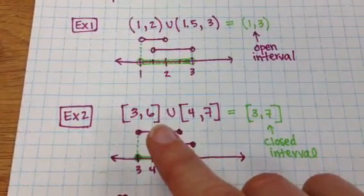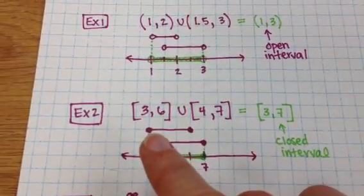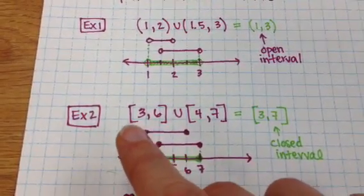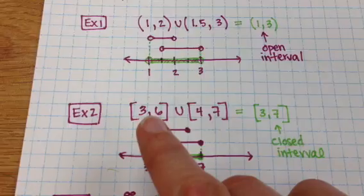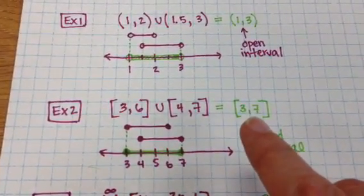Also here are two closed intervals. So the difference between open and closed is just the same as a circle right? If it's a closed circle then it's the bracket which means this is a closed interval. So here's a closed interval union with another closed interval giving us another closed interval.